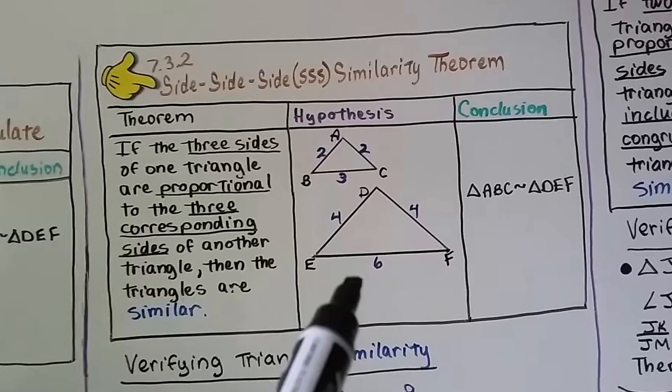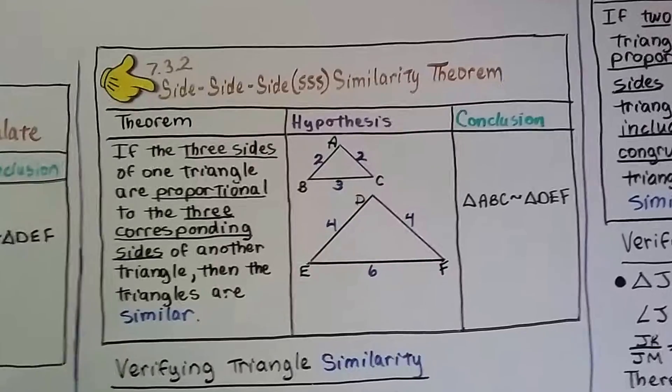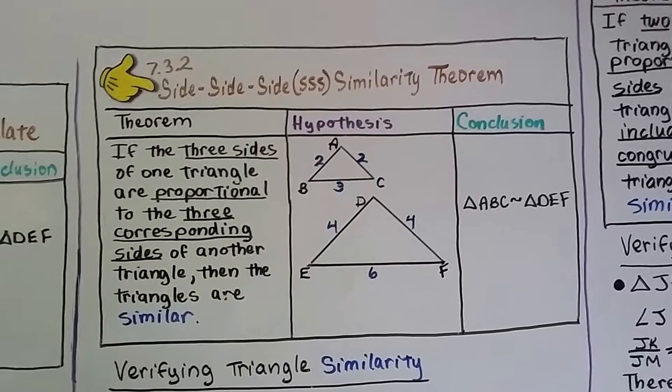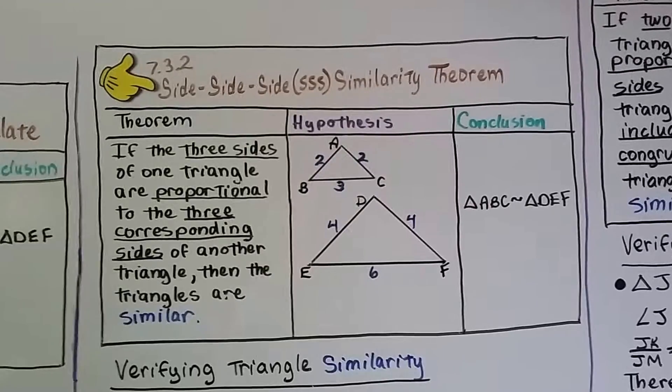BC corresponds to EF, and this 6 is 2 times that 3. So they're proportional, and triangle ABC is similar to triangle DEF.